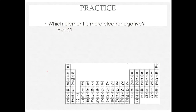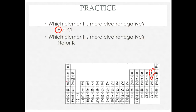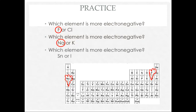Practice: fluorine is more electronegative than chlorine — in fact, fluorine is the most electronegative element on the periodic table. Sodium is more electronegative than potassium, and iodine is more electronegative than tin. To conclude, all of these periodic trends come down to two variables: force of attraction and distance. Make sure you can explain these trends using those variables, and remember that as the number of protons increases, nuclear charge increases, strengthening the force of attraction between the nucleus and valence electrons.